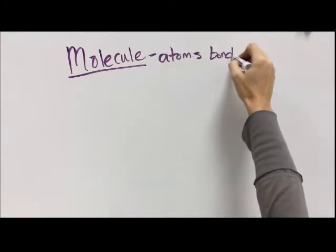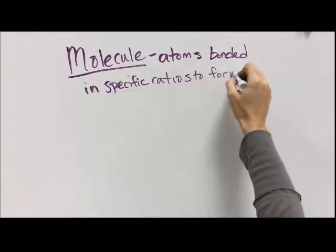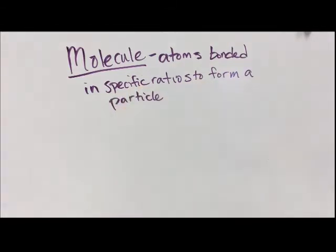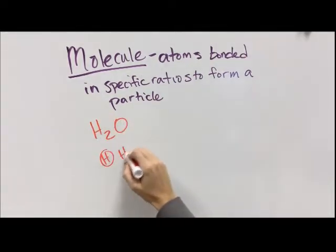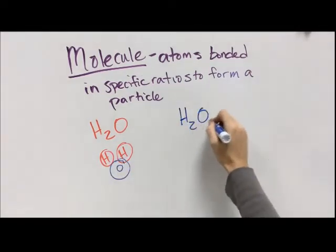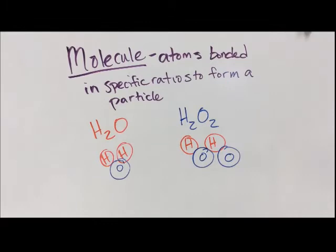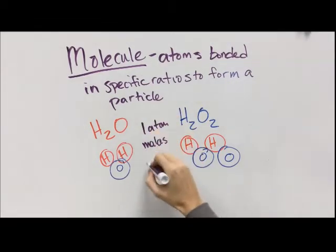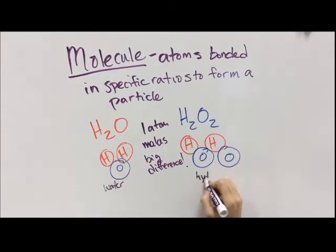A molecule is what we get when atoms bond to each other in specific ratios to form a particle. H2O tells us we have two hydrogens and one oxygen. We could also have H2O2, which is a totally different thing — two hydrogens and two oxygens — a different molecule. One atom can make a huge difference: H2O is water, which we can drink, while H2O2 is hydrogen peroxide, which would poison you.